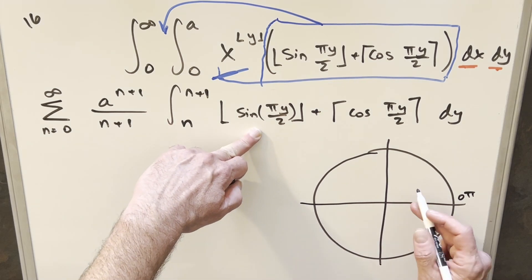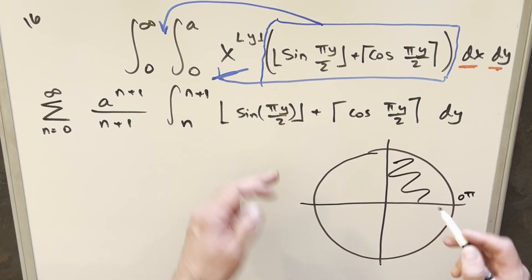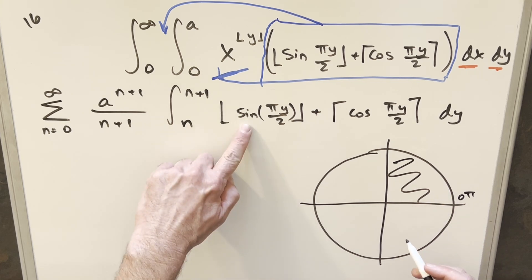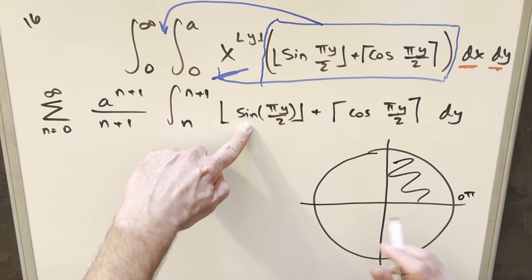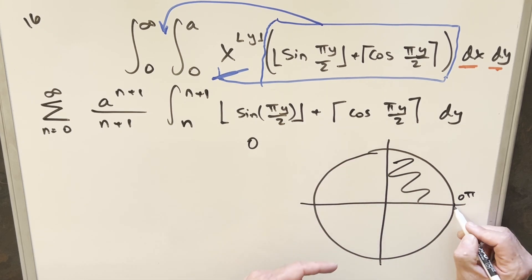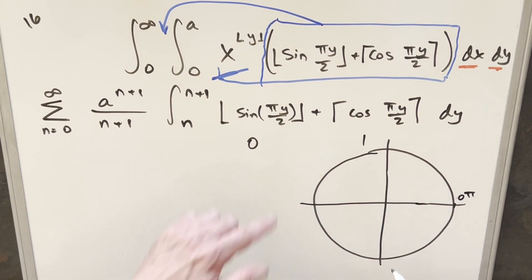In the first quadrant for sine and cosine, everything's going to be over here. And then what's going to happen is sine is going to get rounded down to zero and cosine is going to get rounded up to one right here. So in the first quadrant, it's always going to be zero plus one. This value is just going to be a one.